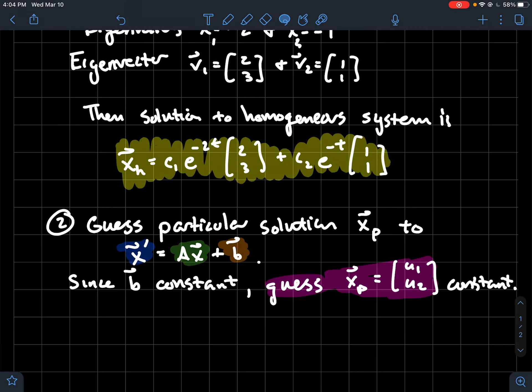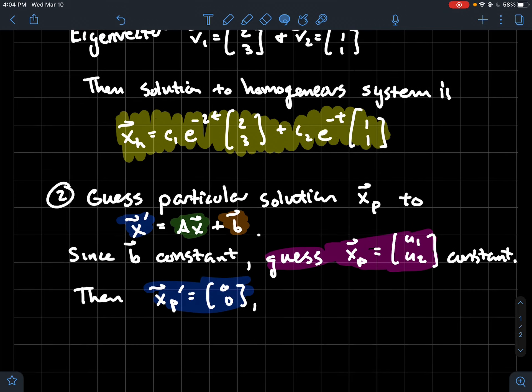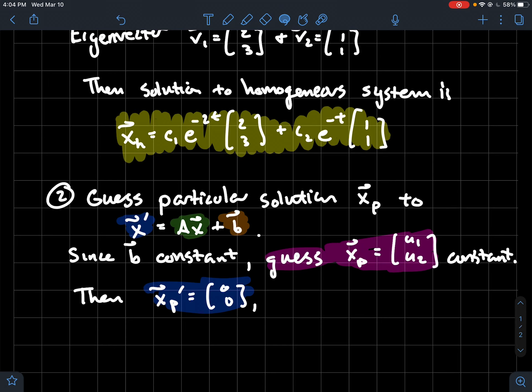If that's what xp is and I'm guessing that's the solution, the good thing about this being constant is this will make some of my work a little bit easier. When I do xp prime, you're just taking the derivative of each of the components. That would be the zero vector, so xp prime would be the zero vector. Now we're going to substitute all this information into our inhomogeneous system.